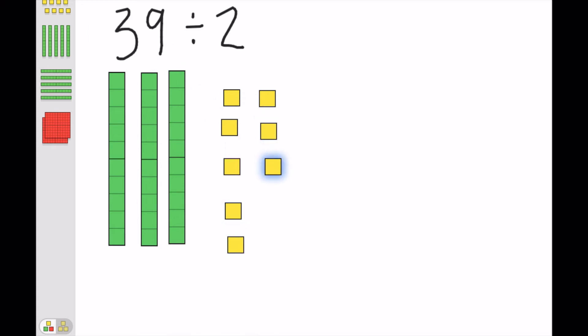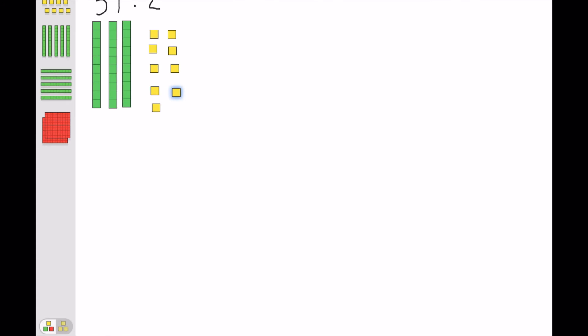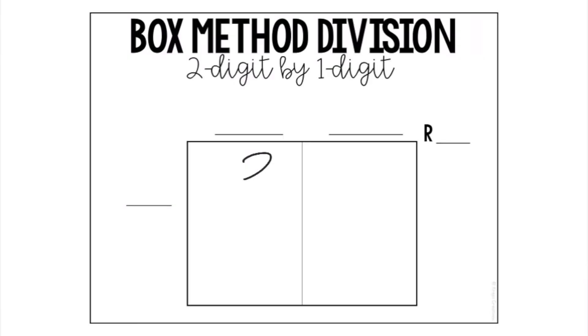The next thing I'm going to do is draw two groups. Here I'm just writing the problem in my box model. 39 divided by 2.